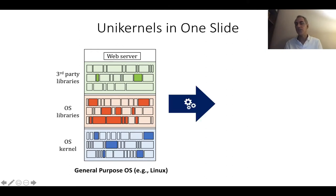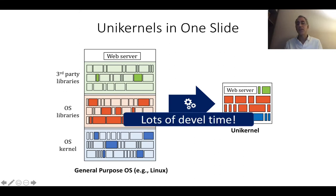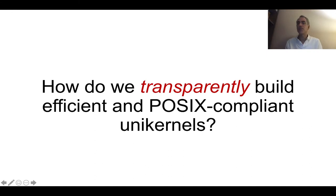In fact, what we'd like to do is, by some sort of magic, be able to take those colored squares and build a custom operating system and software stack for that web server — and that's essentially what a unikernel is. But it takes lots of development time. In the past, we had to manually build this unikernel from scratch for each single application. So the question is, how do we transparently build efficient and POSIX-compliant unikernels such that we can get the efficiency without having to spend a lot of expert time porting applications?